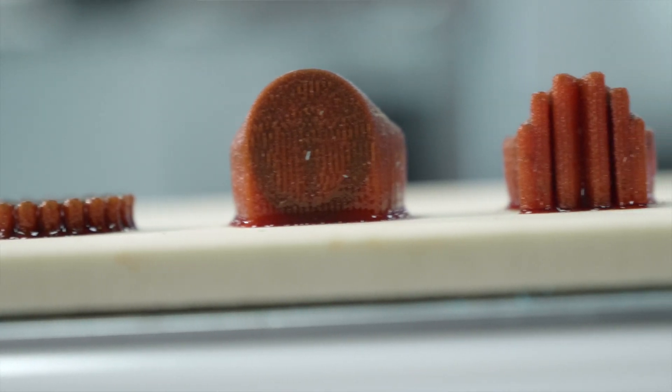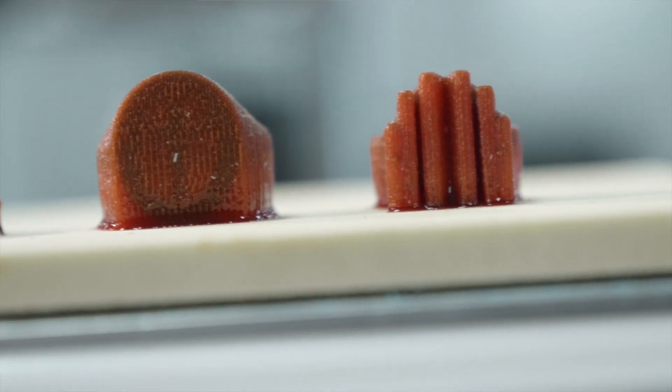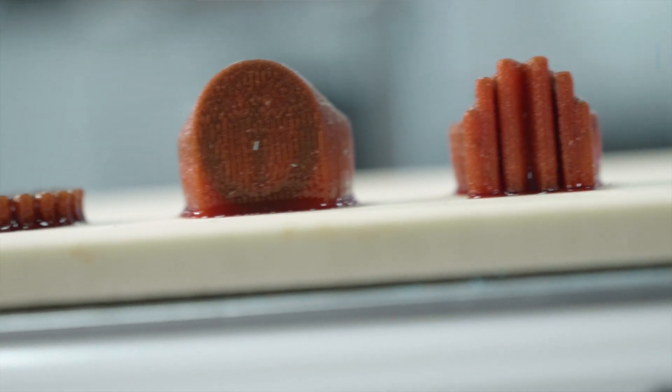Now let's remove your models. A good indication that your models are ready for removal from the build plate is when you see a pool of melted support material around the model.